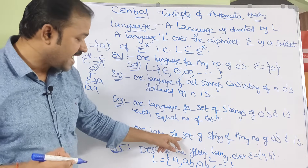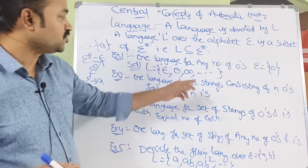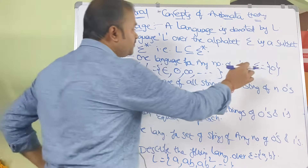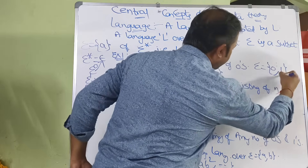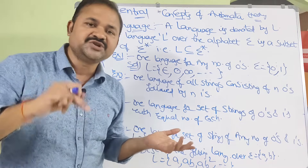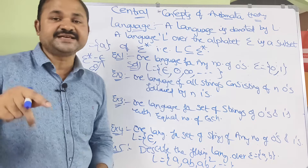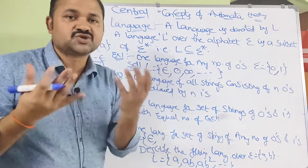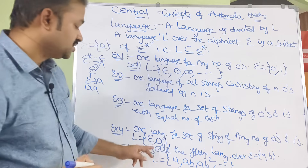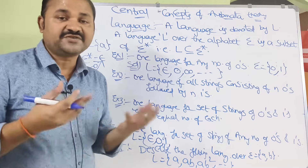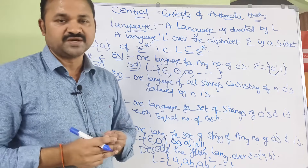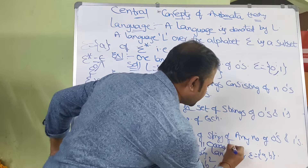Second example: the language for set of strings of any number of zeros and ones. Here sigma equals {0, 1}. The language L includes epsilon (zero occurrences), then strings of length one: 0 or 1, then strings of length two: 00, 01, 10, 11, and likewise any number of zeros and ones with no constraint.